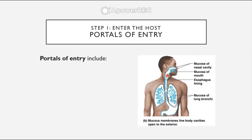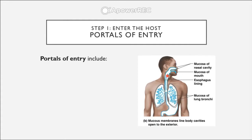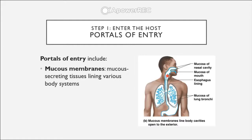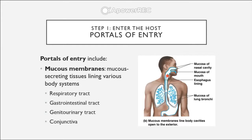Let's cover step one: how microbes may enter the host. We'll first talk about portals of entry. The first portal of entry we'll discuss are mucus membranes, which are mucus-secreting tissues that line various body systems including the respiratory tract, the gastrointestinal tract, the genitourinary tract, and conjunctiva — the mucus membranes associated with the eye.